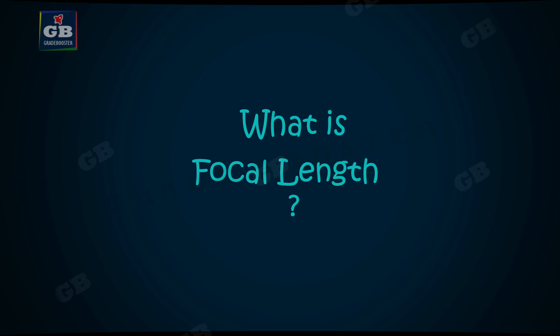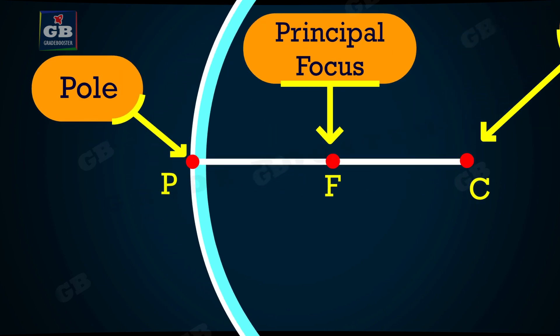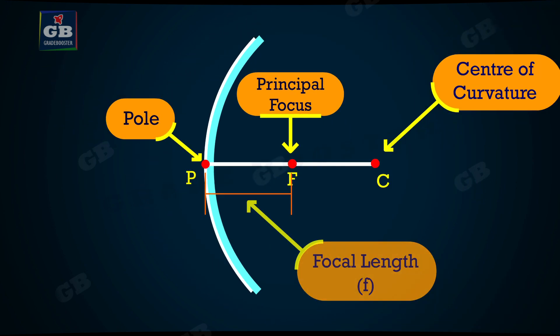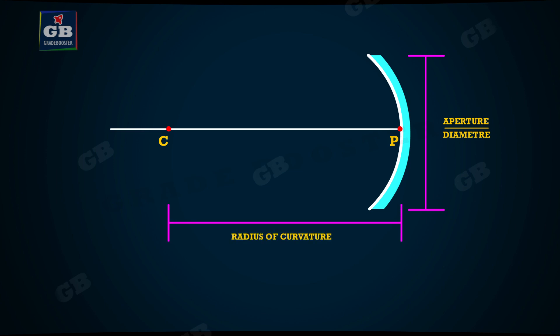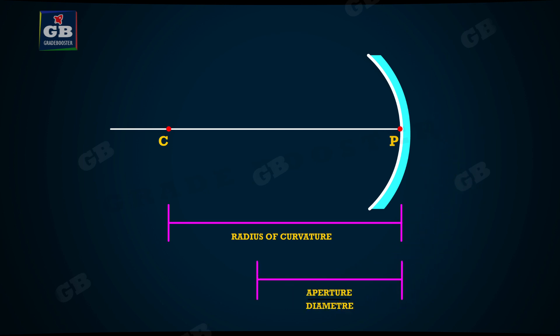Focal length. The distance between the pole and the principal focus of a spherical mirror is called the focal length. It is represented by the letter F. Aperture: the diameter of the reflecting surface of a spherical mirror is called its aperture. In this lesson, we discuss spherical mirrors whose aperture is much smaller than its radius of curvature.